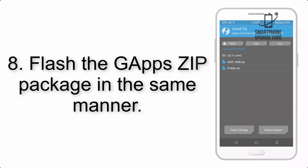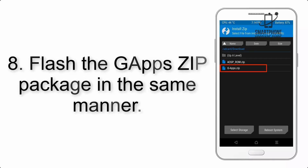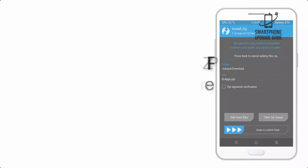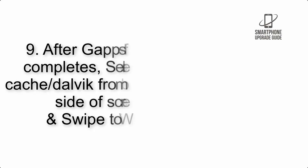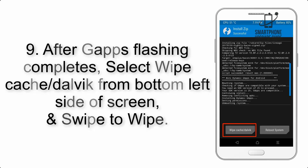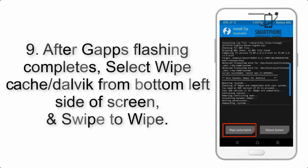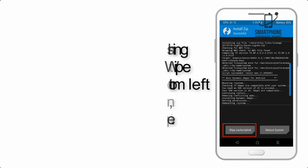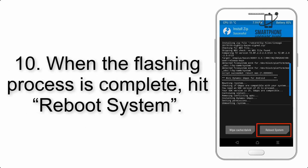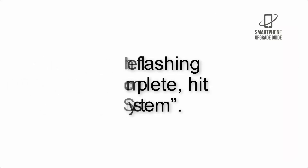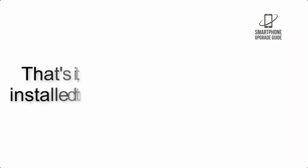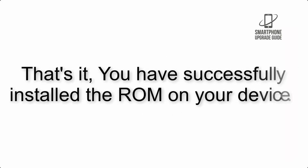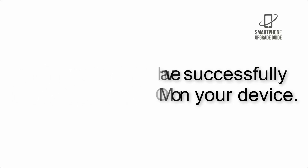Step 8: Flash the GApps zip package in the same manner. Step 9: After GApps flashing completes, select Wipe Cache and Dalvik from the bottom left side of the screen and swipe to wipe. Step 10: When the flashing process is complete, reboot system. That's it — you have successfully installed the ROM on your device.